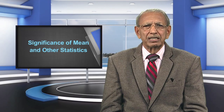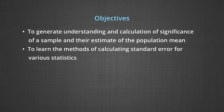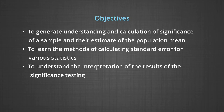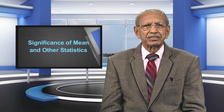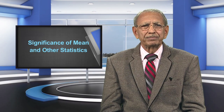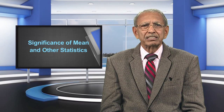The objectives of this module are to generate an understanding of and calculation of significance of a sample mean as an estimate of the population mean, to learn the methods of calculating standard errors for various statistics. We will also try to understand the interpretation of the results of significance testing, and the meaning and use of degrees of freedom, confidence levels, etc. In this module, we will discuss various fundamental concepts and principles related with the significance of various statistics as estimates of their populations.